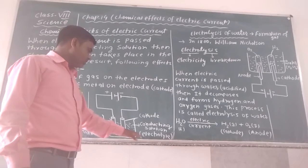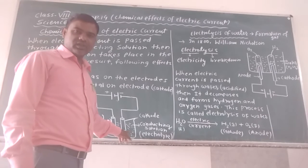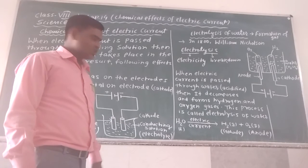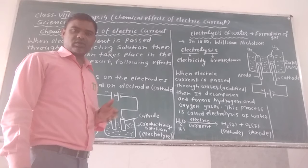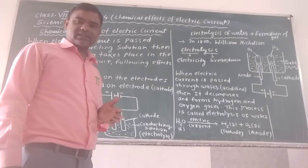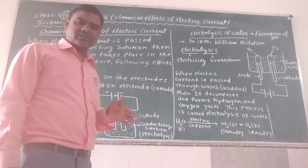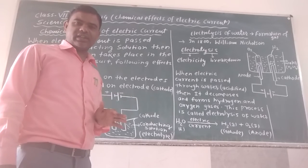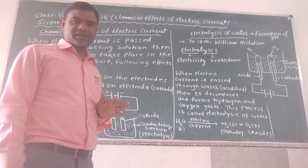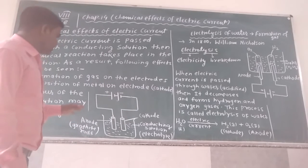Next one is electrolyte. Electrolyte is the conducting solution — the solution which conducts electricity is known as electrolyte. And the third one is electrolysis. Electrolysis means the decomposition of a substance into positive and negative ions when electric current is passed through it. Electrolysis is the name of a process in which a substance splits and breaks down when electric current is passed through it.